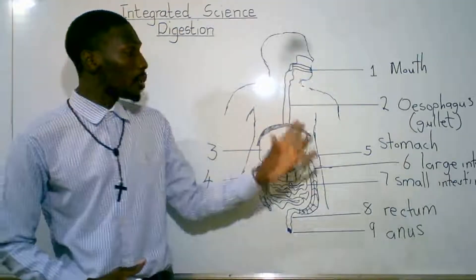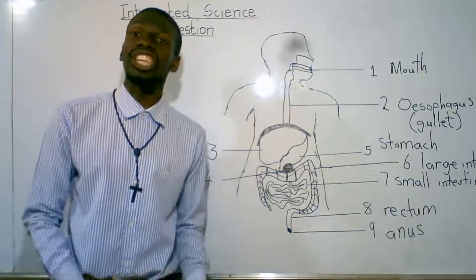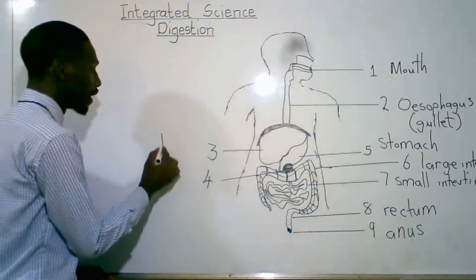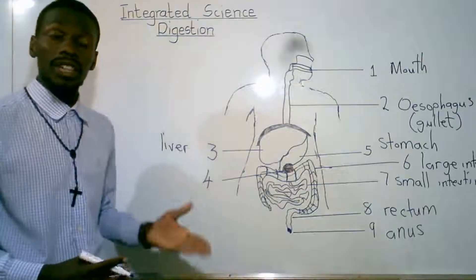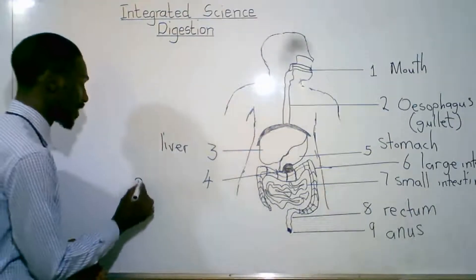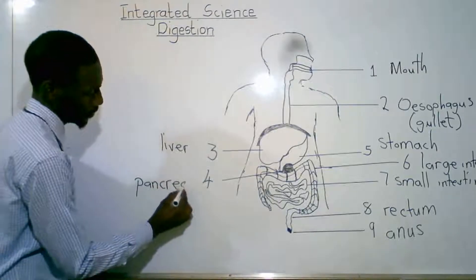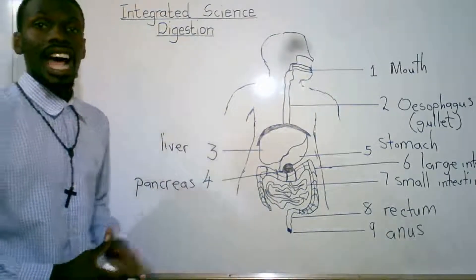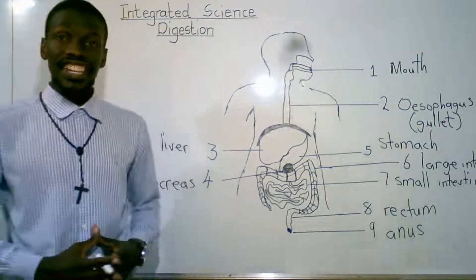Apart from these, there are other organs of the body that help. We've got the liver that produces bile. Apart from the liver, we've got the pancreas. These are the organs of the alimentary canal.